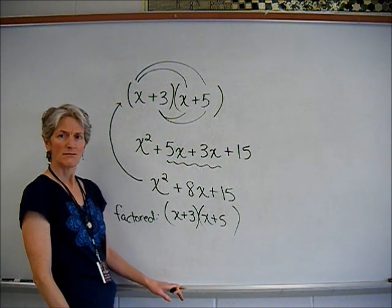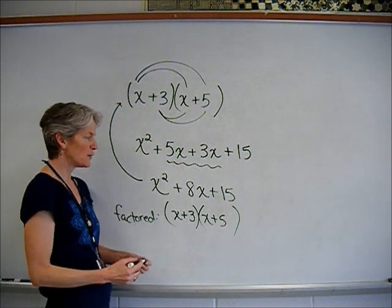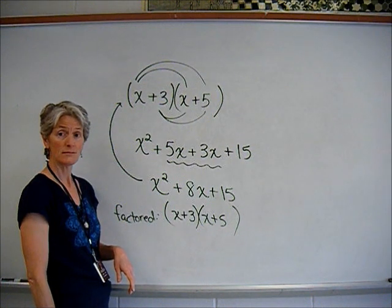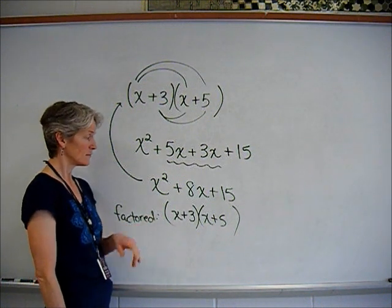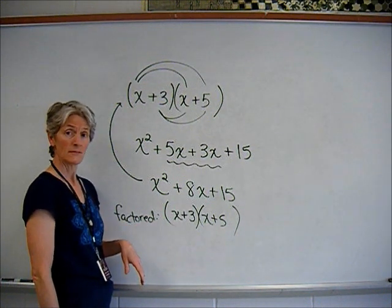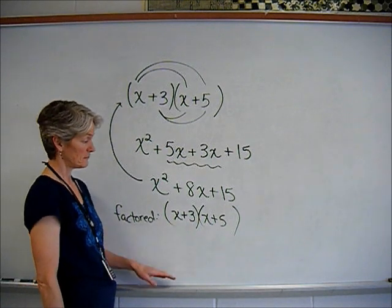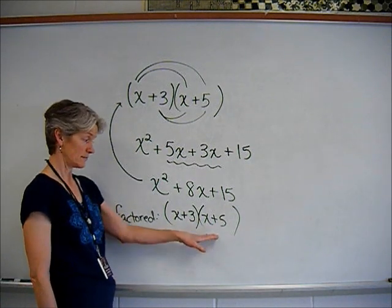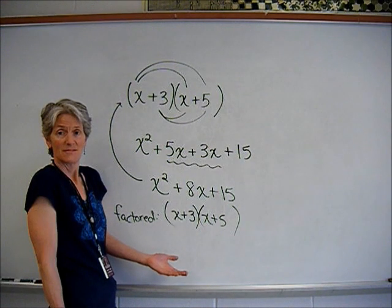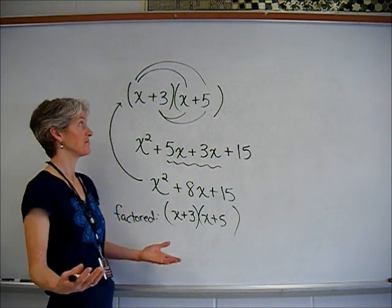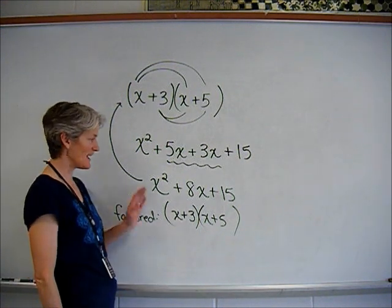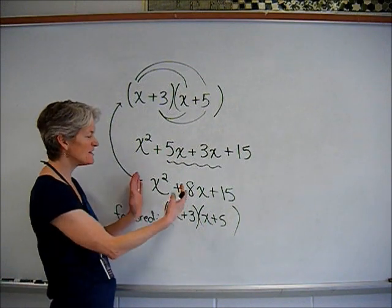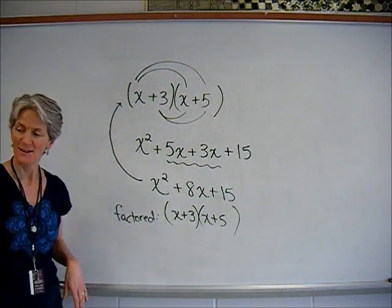x plus 3 times x plus 5. Those are the two factors that multiply together to equal this. So if I ask you to factor this, this is what I'm looking for. And they are really equal to the same thing. As a matter of fact, if I made equations out of them, if I graphed them, y equals x squared plus 8x plus 15 and y equals in parentheses x plus 3 times x plus 5, if I stuck them both in my graphing calculator and graphed them both, they would look exactly the same. They are the same thing.